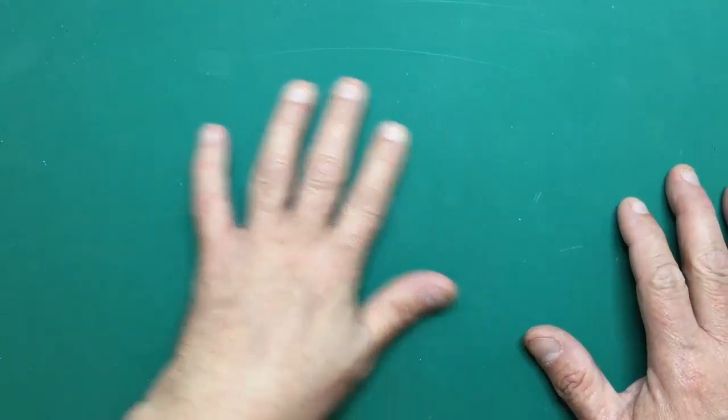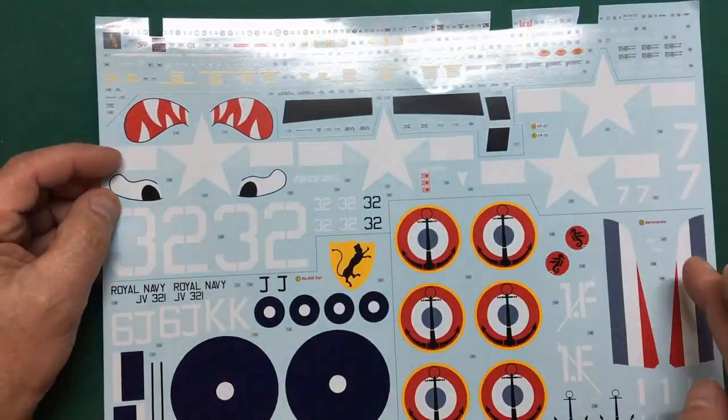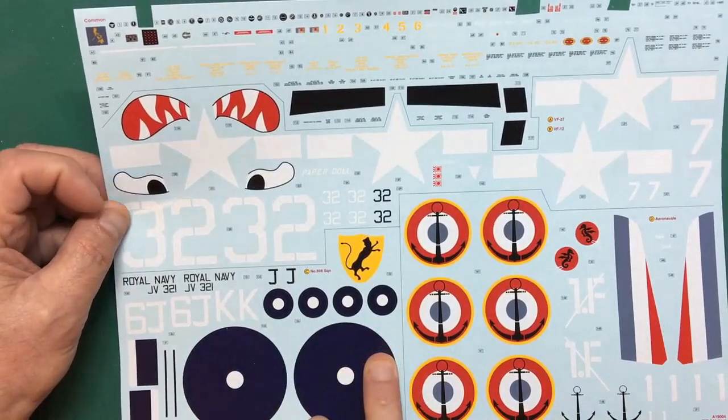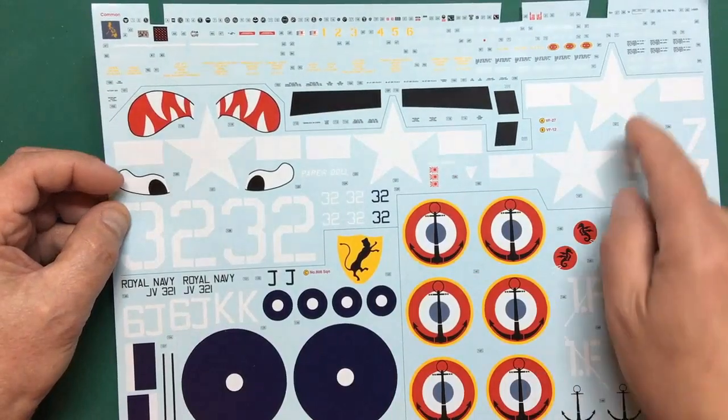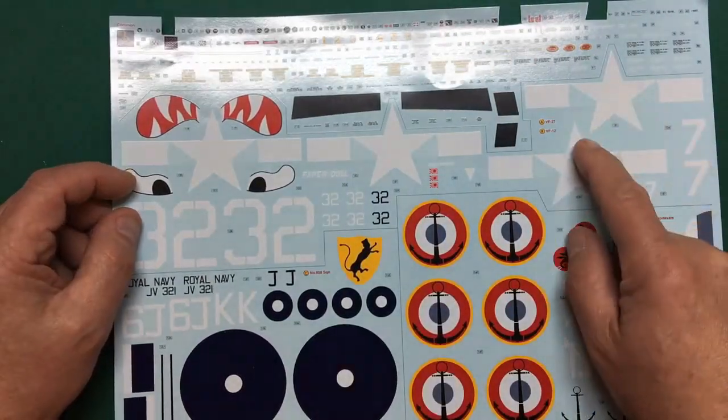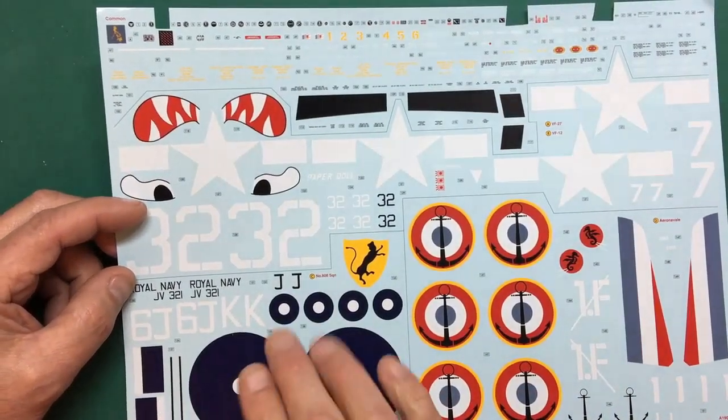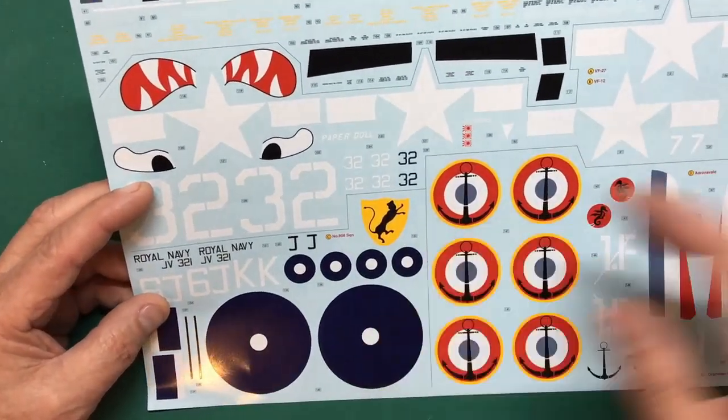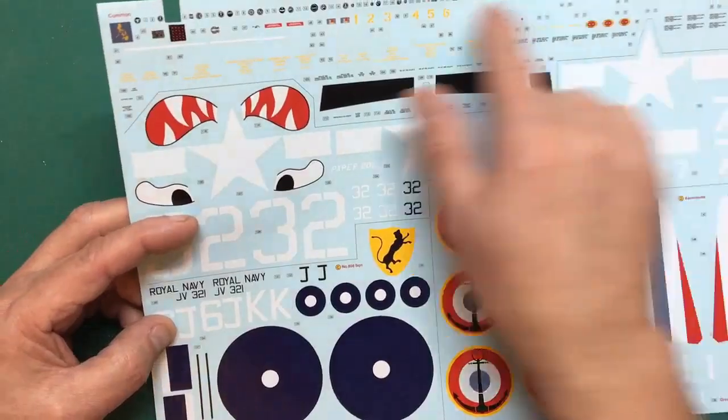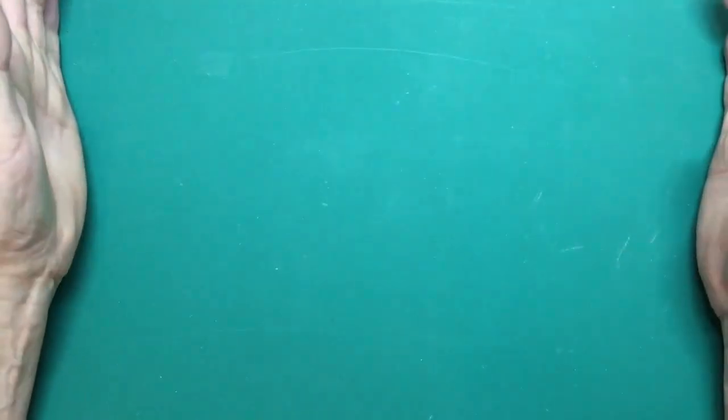It's worth remembering with all of these sets you are going to be using the kit's decals alongside. As we all know, the Hellcat comes with the American schemes, the French scheme, and the Royal Navy scheme. You're going to be using the American Stars and Bars and you may have to use some of these flashes. You'll be using the stencil data from the Airfix kit.